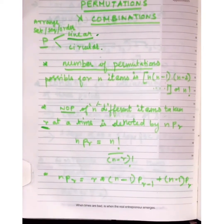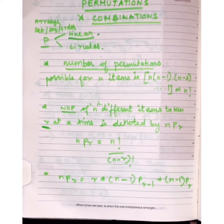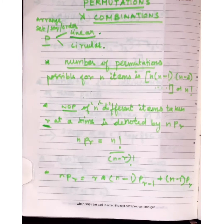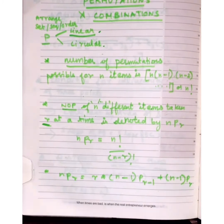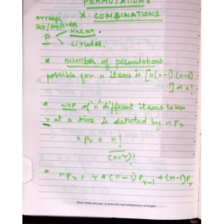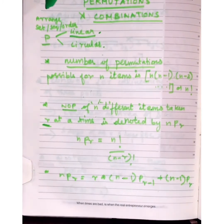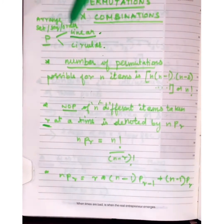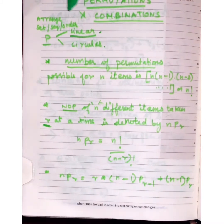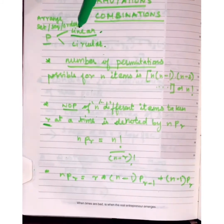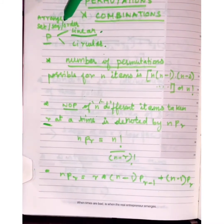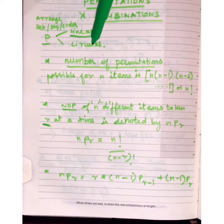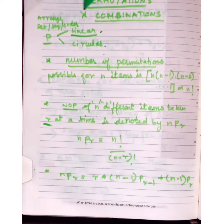The topic is permutation and combination. Permutation is the arranging of a set in a sequence or order. Permutations are classified into two types: linear permutation and circular permutation.